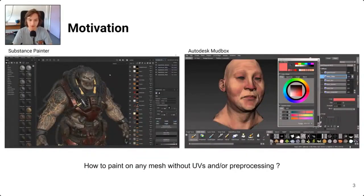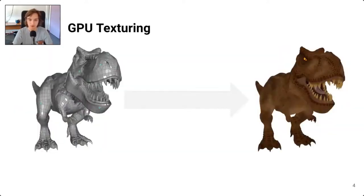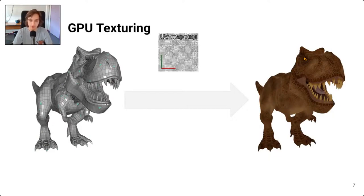Nowadays painting software such as Substance Painter or Mudbox are widespread. Their key feature is to allow artists to intuitively texture their assets by directly painting on the mesh surface. The main motivation behind HTex is to provide the ability to drag and drop any mesh in such software so that you can immediately start painting without any additional steps. The key is the texturing method, which will map texels onto the mesh surface and must run entirely on the GPU.